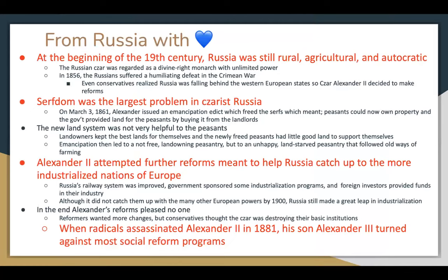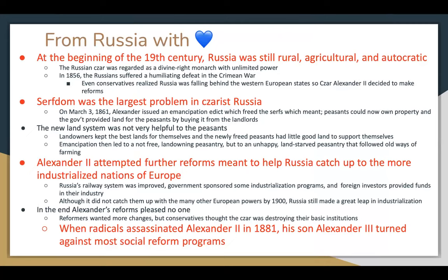Russia with Love: at the beginning of the 19th century, Russia was still rural, agricultural, and autocratic. The Russian Tsar was regarded as a divine right monarch with unlimited power. In 1856 the Russians suffered a humiliating defeat in the Crimean War, and even conservatives realized Russia was falling behind western European states. Tsar Alexander II decided to make reforms. Serfdom — essentially slavery — was the largest problem in tsarist Russia. On March 3rd, 1861, Alexander issued an emancipation edict which freed the serfs, meaning peasants could now own property. The government provided land for peasants by buying it from landlords, but this new land system wasn't very helpful — landowners kept the best lands, and the newly freed peasants had little good land to support themselves.